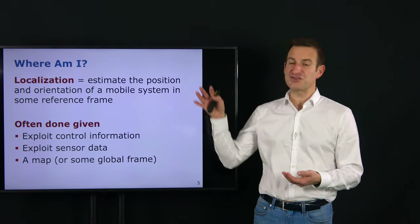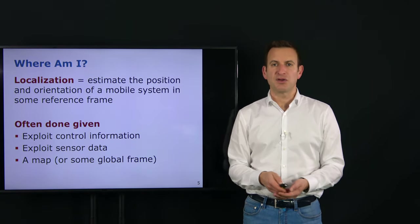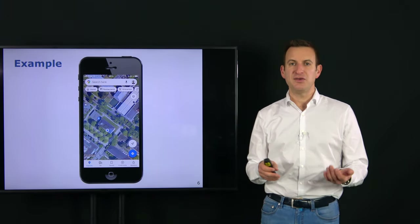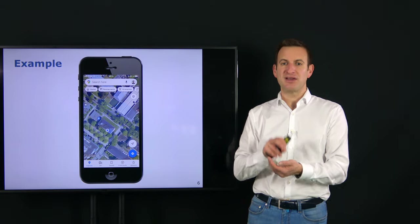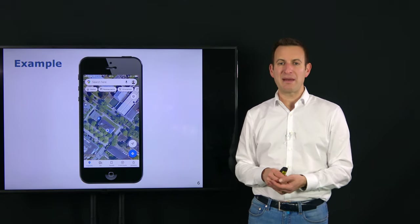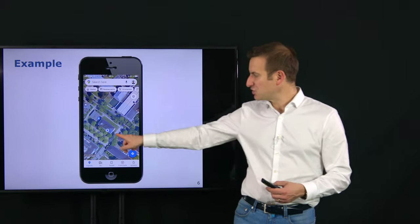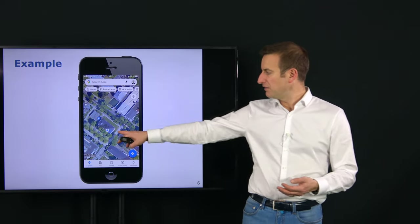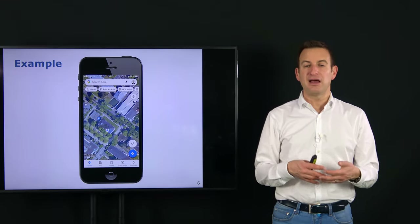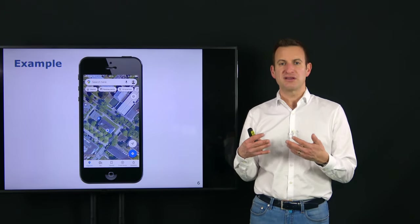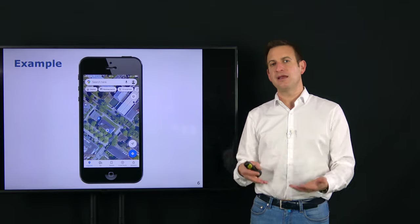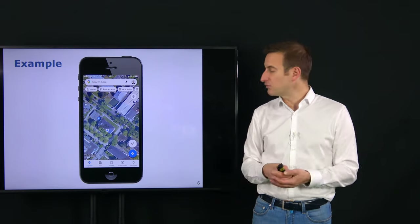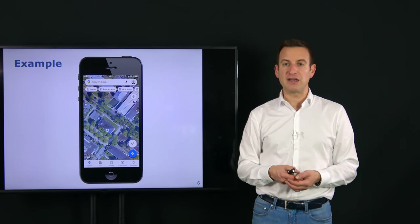Localization means answering the question: where am I? You know this as a human. If you think about your mobile phone and use your favorite map application and press 'localize me,' you will have a map showing you a spot — for example, here in our building — which tells you where you are. In this example, you have a longitude-latitude value given, which describes a position in the GPS coordinate system so you can use this global reference frame to describe your location.